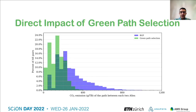Now we look into the amount of emission that the green path selection could save. According to our simulations on a large-scale inter-domain topology consisting of 2,000 ASs including all large Tier 1 and Tier 2 ASs, selecting the greenest path, regardless of the green competition between ASs, could reduce the carbon footprint of inter-domain communications between 90% of AS pairs. This reduction is at least 50% for half of the AS pairs, equivalent to 400 grams of CO2 per TB.